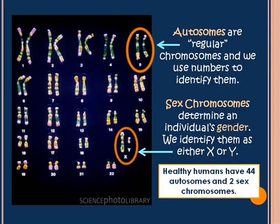Sex chromosomes really only do one important thing: determine your gender. We identify those as either X or Y. A healthy human has 46 total chromosomes — 44 of those are autosomes and two are sex chromosomes.